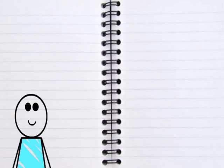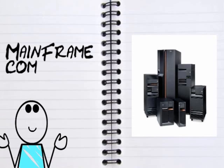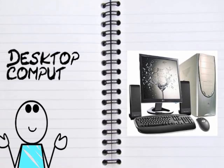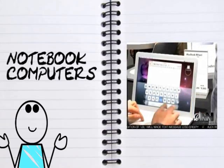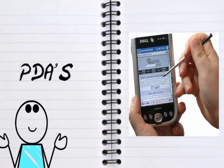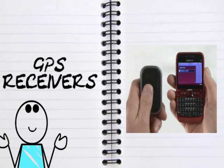Some examples are this: mainframe computers, servers, desktop computers, notebook computers, tablet PCs, smartphones, PDAs, and GPS receivers.